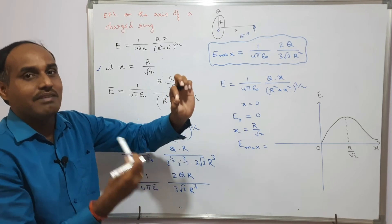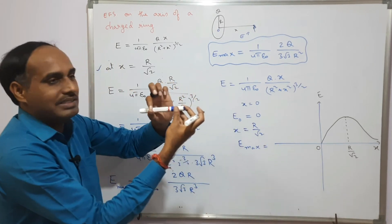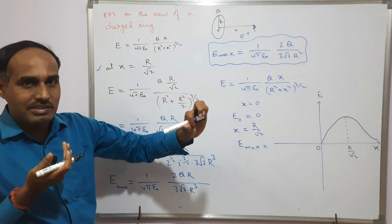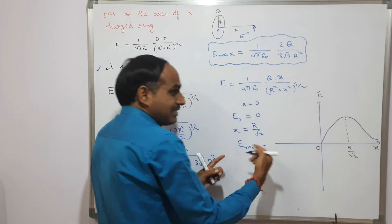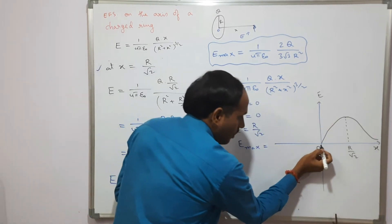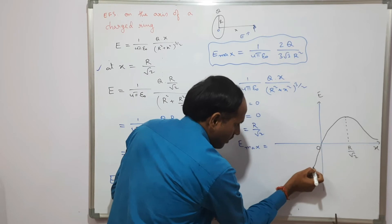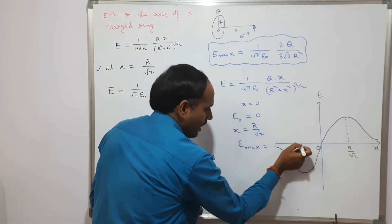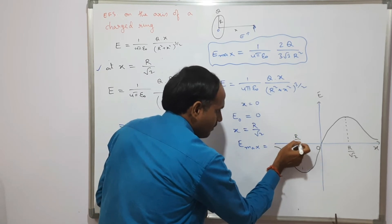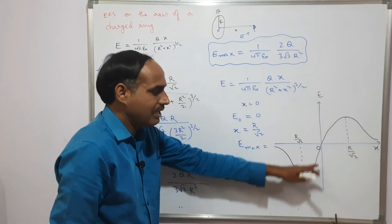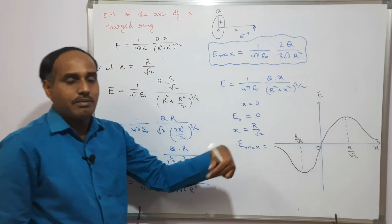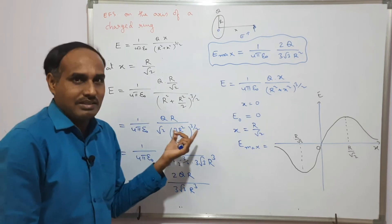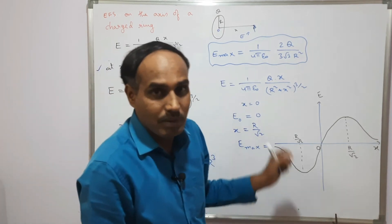The same behavior occurs on the other side of the ring. Since the ring is in a plane, there is also an electric field on the negative-x side, but in the reversed direction. So on that side the curve increases (in the negative direction) to a magnitude maximum at x = −r/√2, then decreases again.